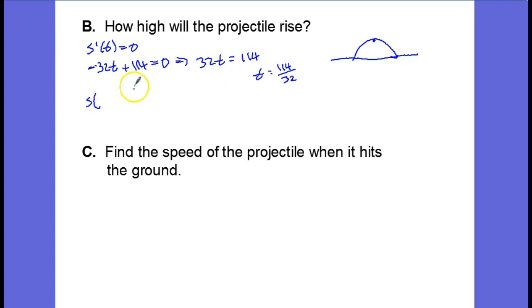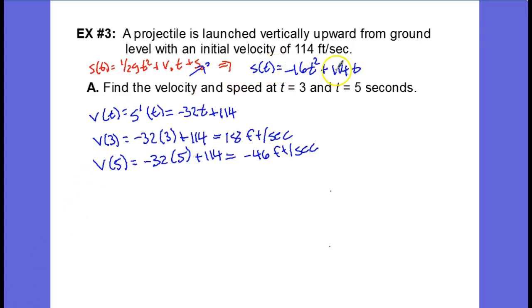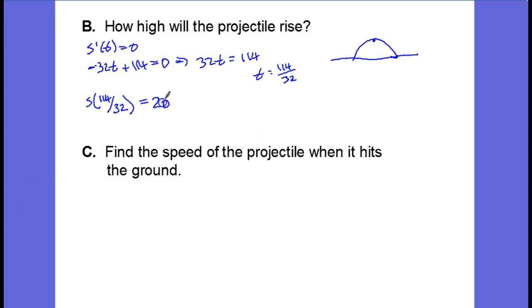I wouldn't even bother simplifying this because all we're going to do is plug that into the position equation. We end up with substituting into this formula: negative 16 times 114 over 32 squared, plus 114 times 114 over 32, approximately 203.0625 feet.